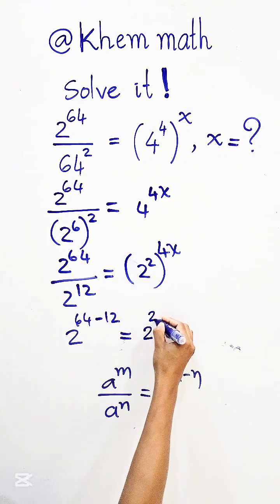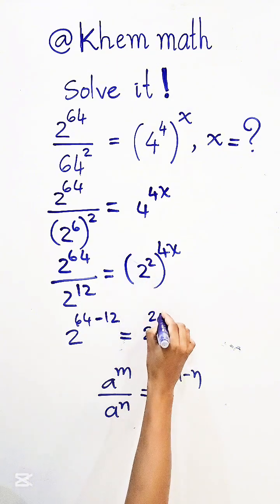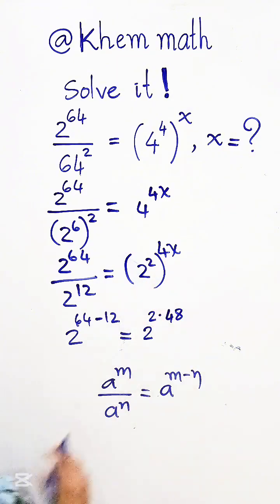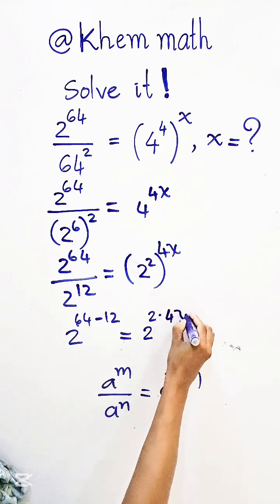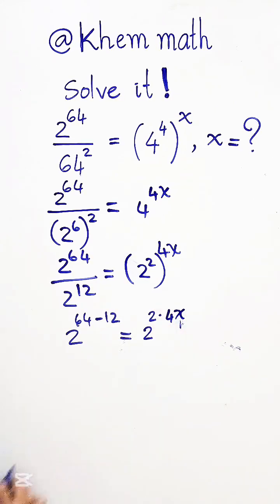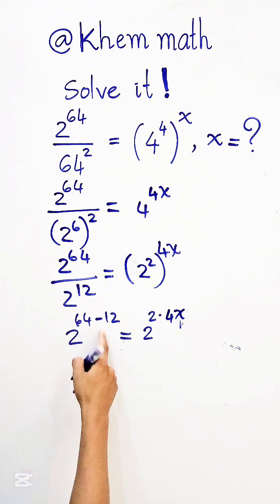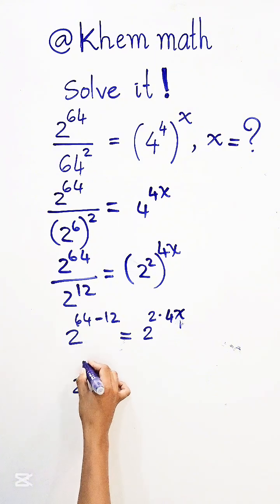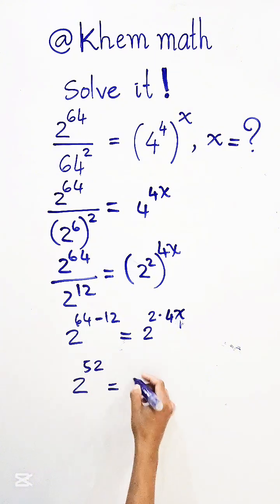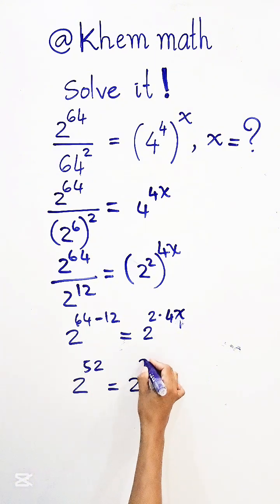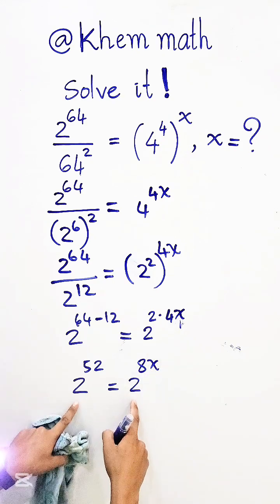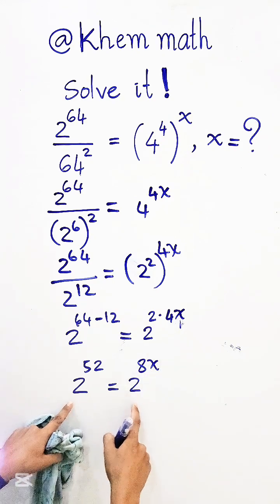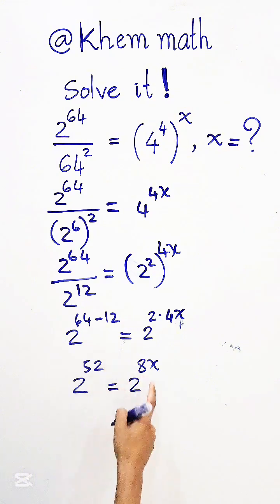And the right side: we use the formula to get 2 to the power 2 times 4 times 8, which equals 2 to the power 48. So the left side is 2 to the power 52 and the right side is 2 to the power 48. Since the bases are the same, we can equate the exponents.